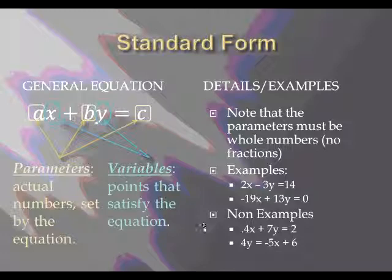How about some non-examples? What does not work? 0.4x. That 0.4 is what makes this a non-example. That's a decimal. Decimals and fractions cannot be a parameter. Also the second one: 4y equals negative 5x plus 6. This is a non-example because x and y are separated by the equal sign. Or if you look at the general equation, x and y are on the same side. There's been some manipulation done and that's no longer in standard form.